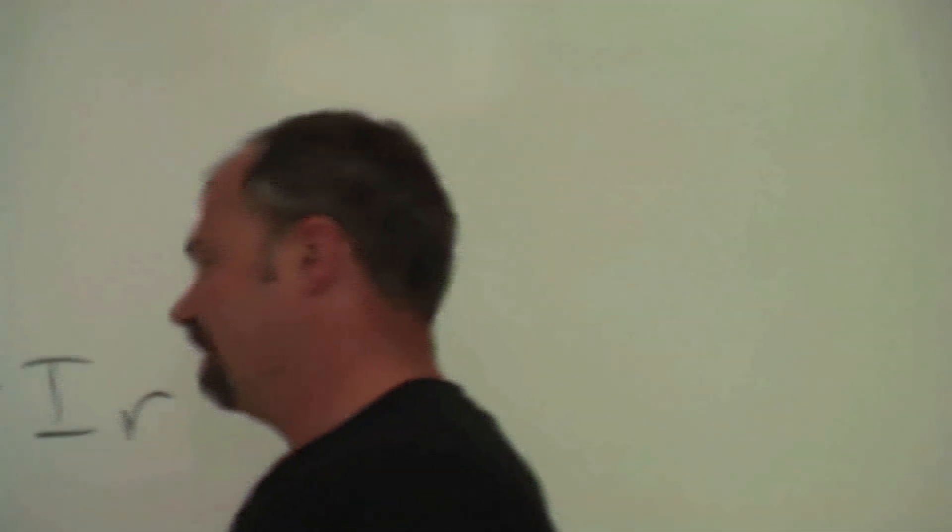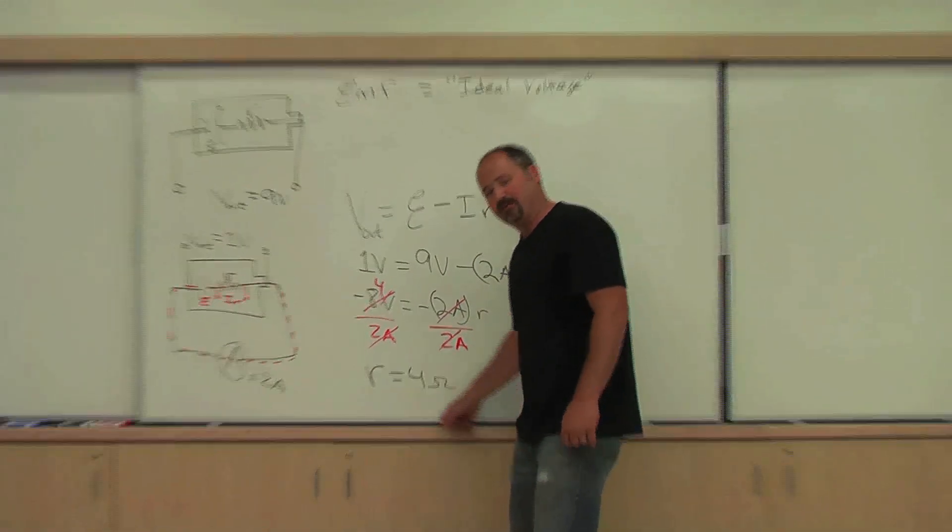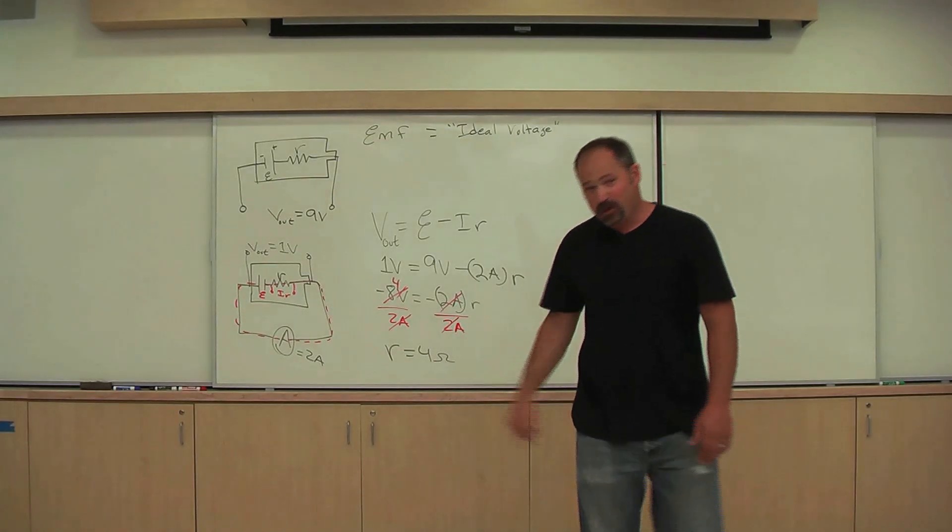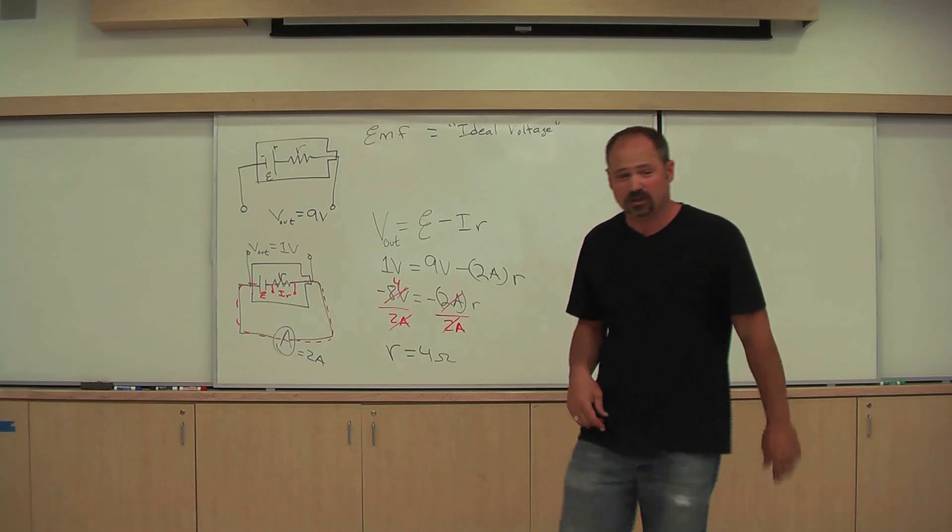So all of these might add up to around 0.5 an ohm, right? So okay, maybe the internal resistance is only 3.5 ohms, not 4 ohms, but the point is still made. You have to consider the internal resistance when dealing in a real situation.